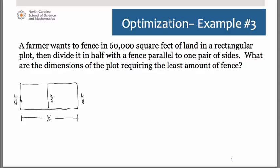So that would be our diagram. Let's figure out what it is we were given. We're told that we have an area of 60,000 square feet. And of course we know area is length times width. So that would be x times y.